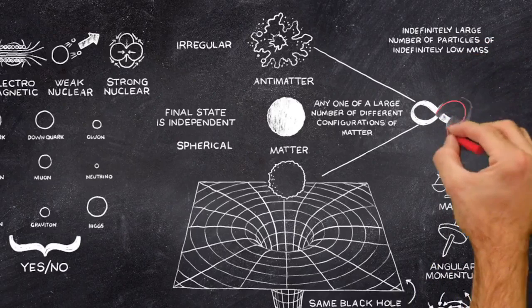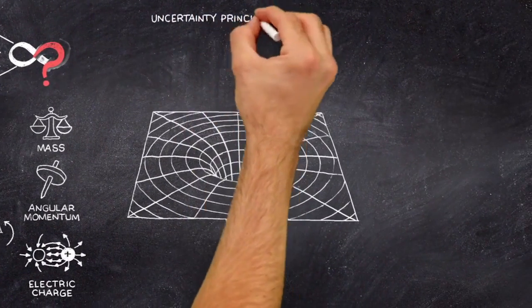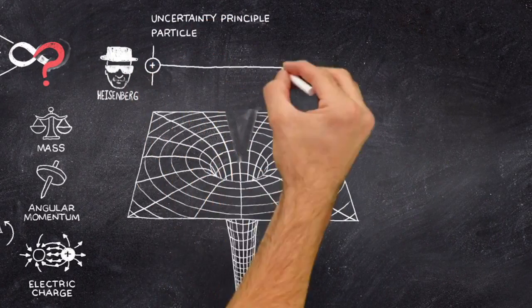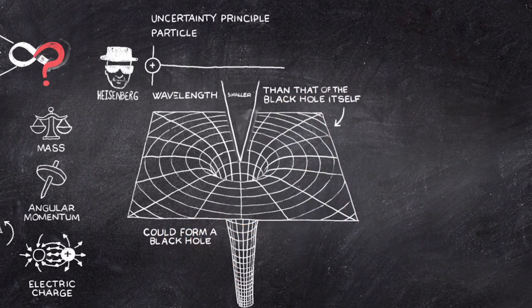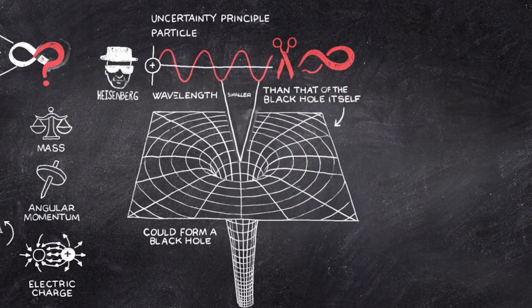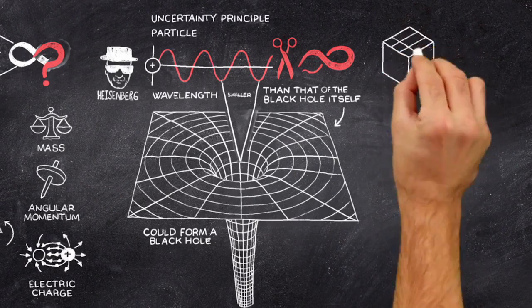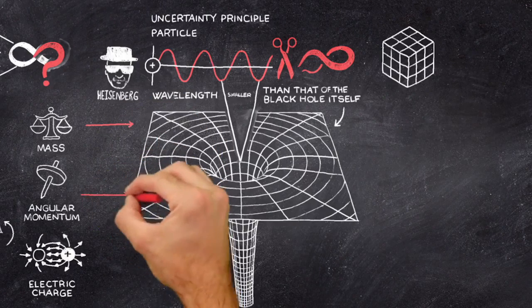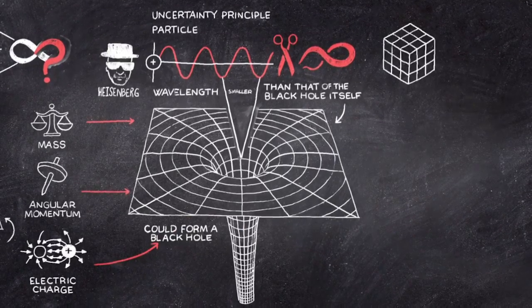But could the number of configurations really be infinite? The uncertainty principle of quantum mechanics implies that only particles with a wavelength smaller than that of the black hole itself could form a black hole. That means the wavelength would be limited. It could not be infinite. It therefore appears that the number of configurations that could form a black hole of a given mass, angular momentum, and electric charge, although very large, may also be finite.